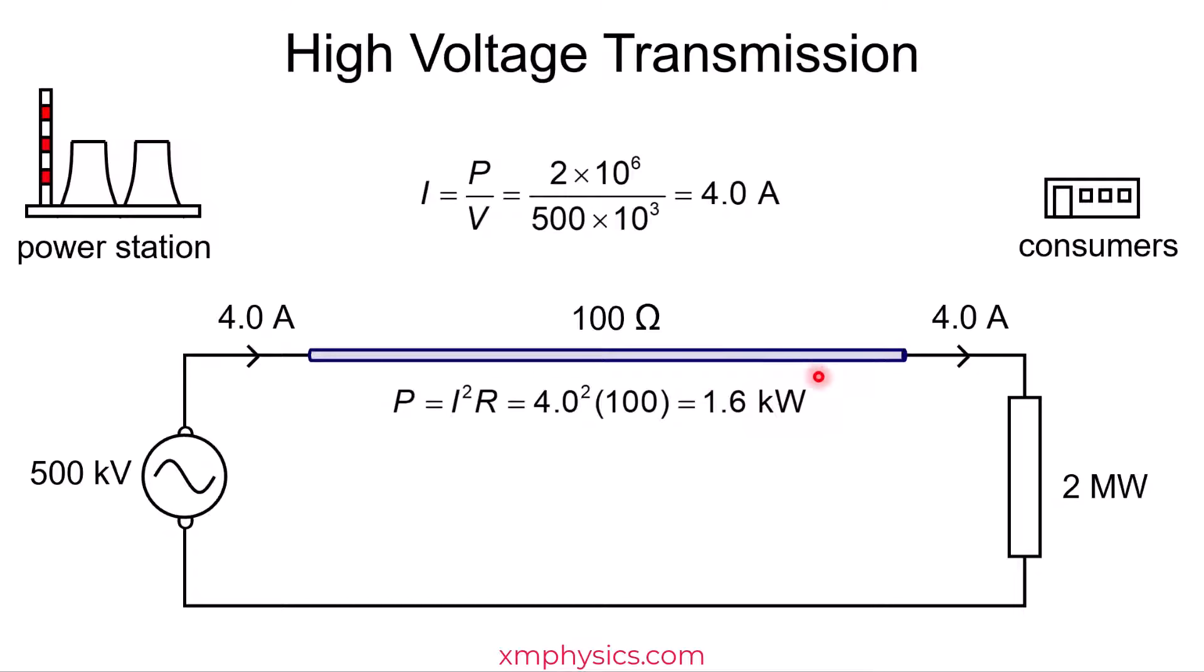So there's power loss as heat in this cable here. Let's calculate the amount using I²R. Oh, turns out the power loss is 1.6 kilowatts, which is okay compared to 2 megawatts. Let's also calculate the potential drop across the cable using V = IR. Turns out to be 400 volts, which is again okay compared to 500 kilovolts. So if we use high voltage transmission, then it turns out the 500 kilovolts here does end up roughly 500 kilovolts here. That's a drop of just 400 volts. And also, we basically delivered 2 megawatts with just a tiny fraction of 1.6 kilowatts loss as heat in the power cable.